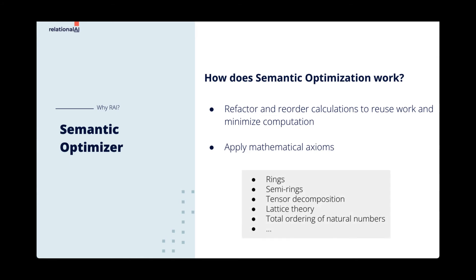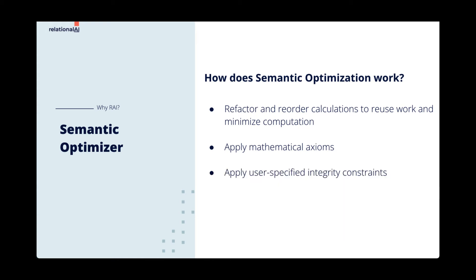These rewrites leverage mathematical axioms, objects, and properties about rings, semi-rings, tensor decomposition, lattice theory, and more. And these rewrites leverage the graph's metadata, relationships, and integrity constraints. There are no hard-coded optimization rules, and queries are not optimized in isolation.